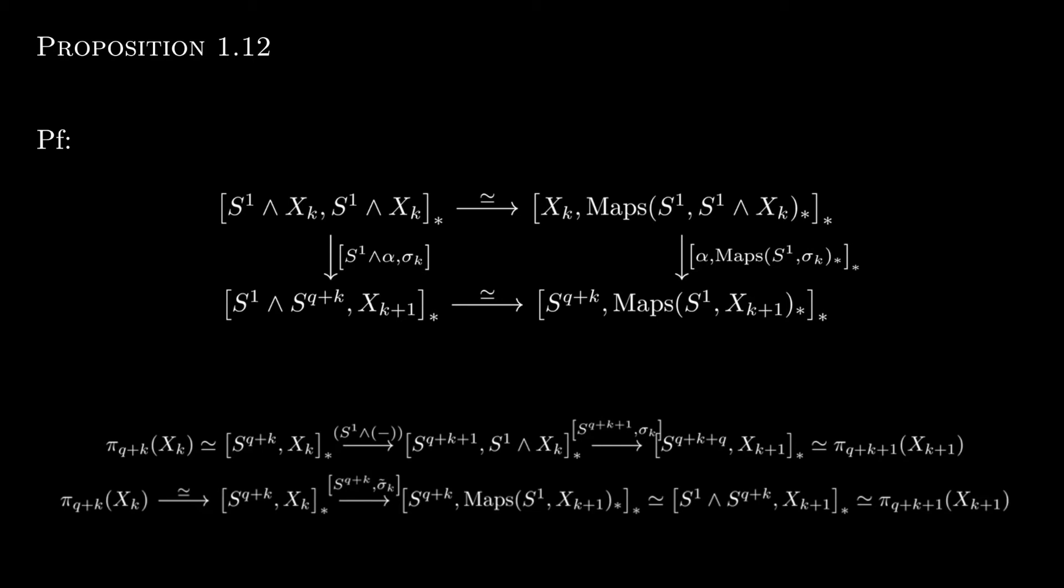I'll be the first to admit that this proof confused me a little. In particular, I'm not entirely sure what the alpha in the vertical maps is. I believe it is a function that sends the object X_k to the object X_q+k, but I'm not entirely sure. I'm also not sure why we had to pick the identity map in the top left in particular. If anyone has insights into this proof or those questions, please leave it in the comments.